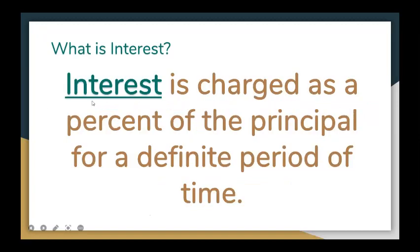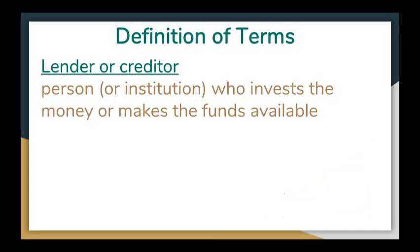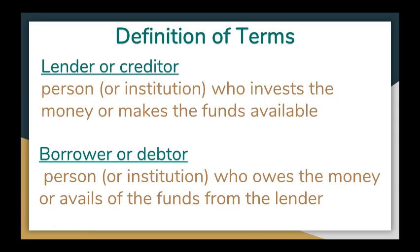So what is the meaning of interest? Interest is charged as a percent of the principal for a given period of time. Now let's have the definition of terms. First, we have the lender or creditor — a person or institution who invests the money or makes the funds available. Next is borrower — a person or institution who owes the money or avails of the funds from the lender.